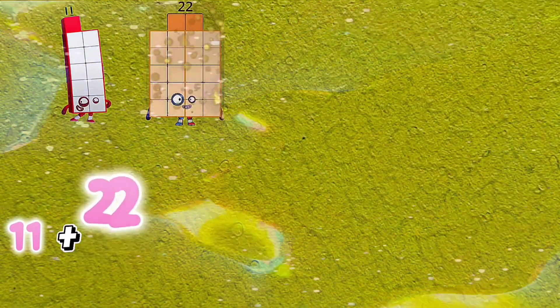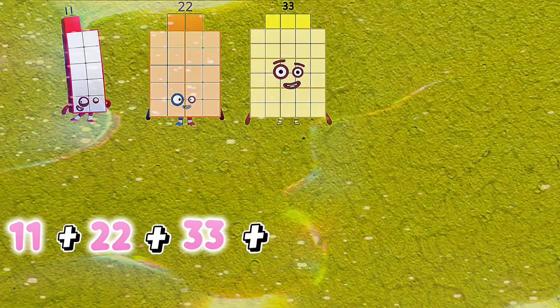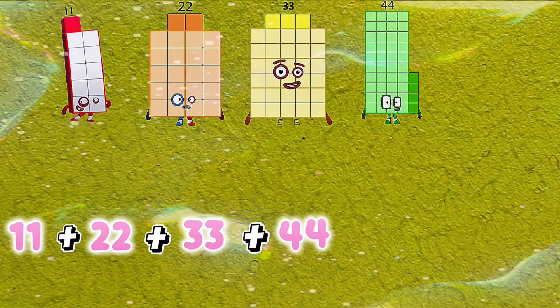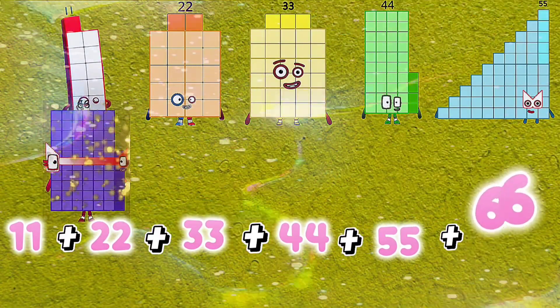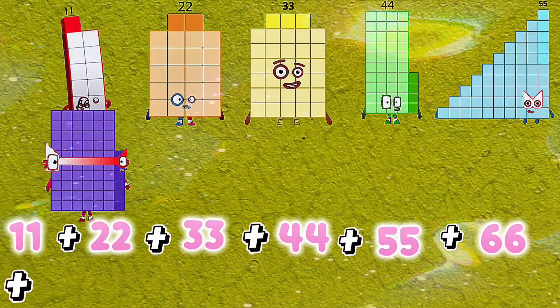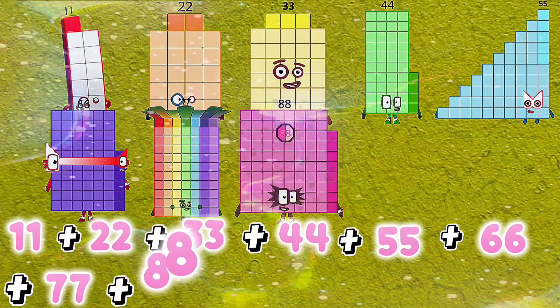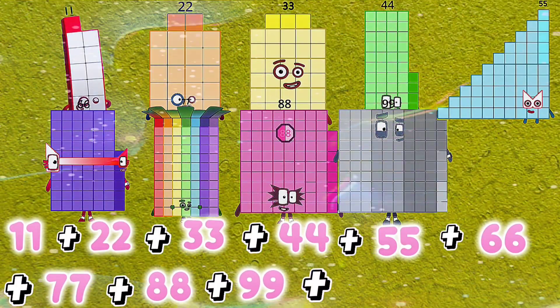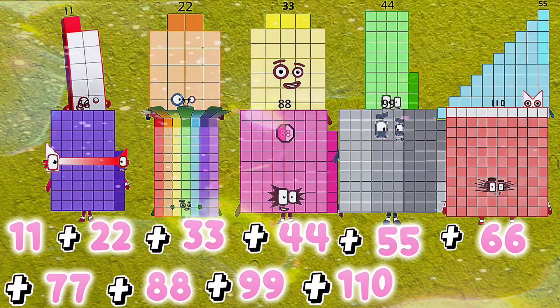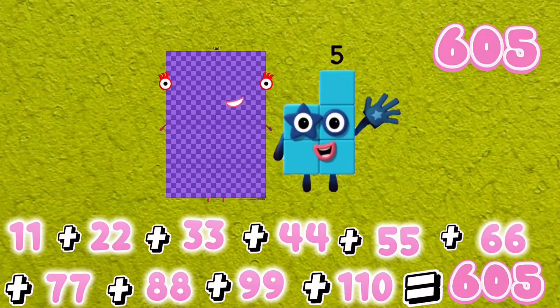11 plus 22 plus 33 plus 44 plus 55 plus 66 plus 77 plus 88 plus 99 plus 110 is equals to 605.